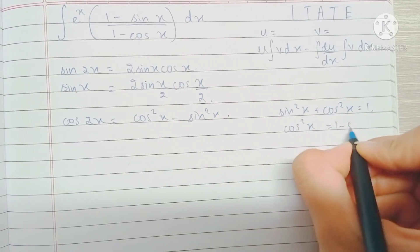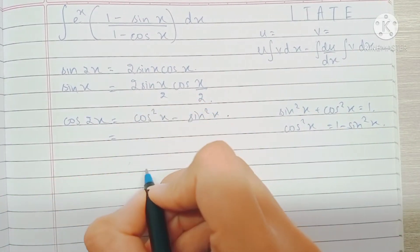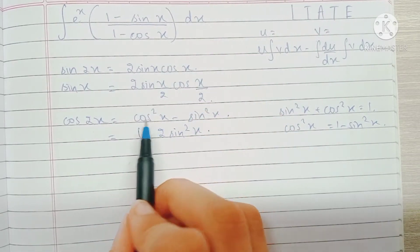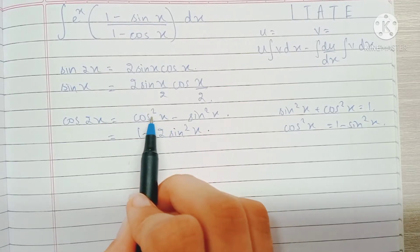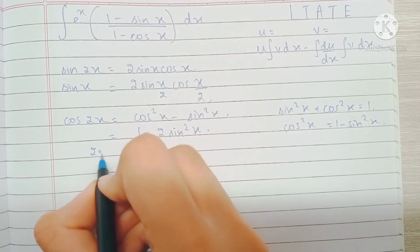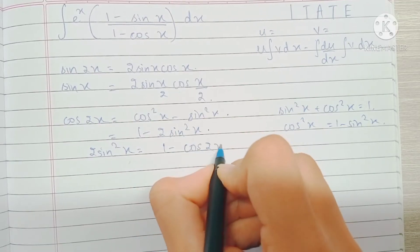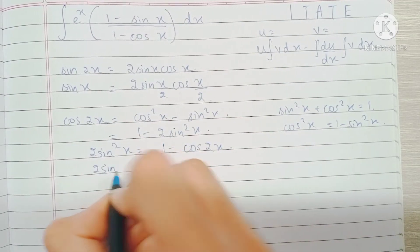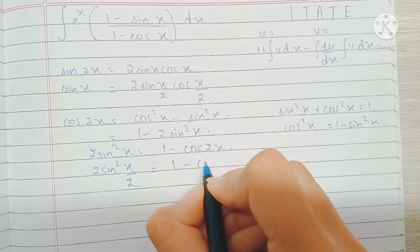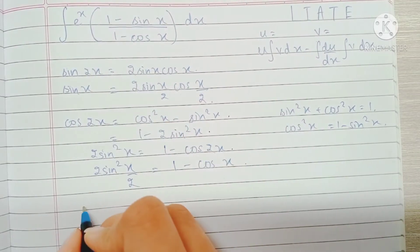If we replace that in the formula, cos2x becomes 1 minus 2sin²x, because cos²x becomes 1 minus sin²x, so minus sin²x gets added to minus sin²x. This means that 2sin²(x/2) equals 1 minus cosx.